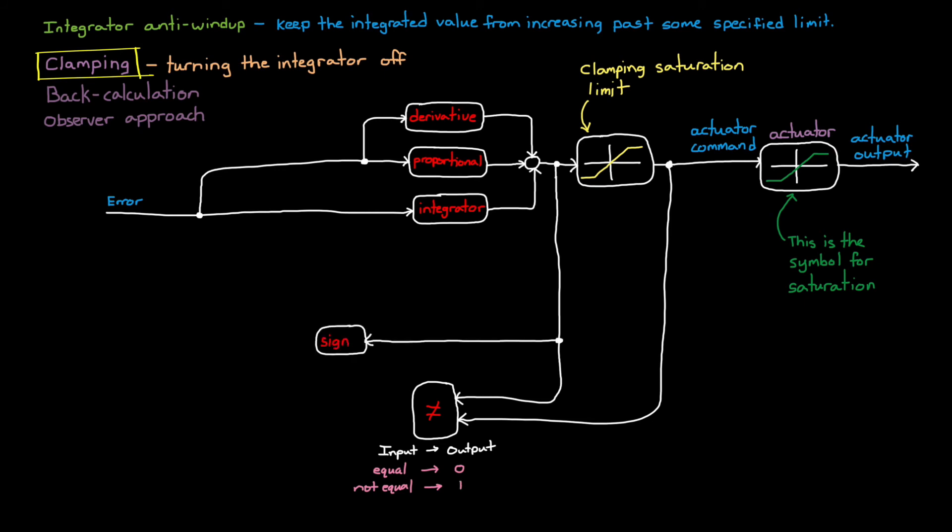The second check is to compare the sign of the controller output with the sign of the error. If both the error and the controller output are positive, then we know that the integrator is still adding to the output to make it more positive. And if they're both negative, then we know that the integrator is trying to make it more negative. So we're looking to see if the output is currently saturating and the integrator is attempting to make things worse. From this we can tell whether to clamp or not to clamp.